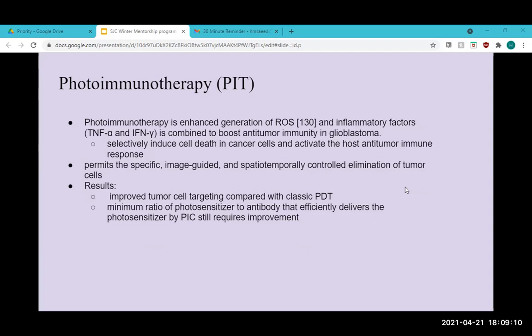The next treatment for glioblastoma was photoimmunotherapy. Photoimmunotherapy is basically when they use infrared light or near infrared light to develop antibodies that bind to the cancer cells. When these antibodies bind to the cells, it triggers the cancer cells to undergo apoptosis and destroys them.